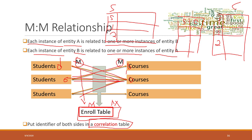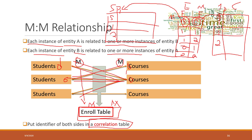We introduce the third table to handle the many-to-many relationship. For example, student one is taking course one, student one is taking course two, student two is taking course one, and student two is taking course two. The student ID on the enroll table is a foreign key, and the course ID is another foreign key. A table can have two foreign keys. The student ID on the student table is the primary key, and the course ID on the course table is the primary key. The enroll table's student ID refers to the student table — that is a one-to-many relationship — and the course ID refers to the course table — that is also a many-to-one relationship.